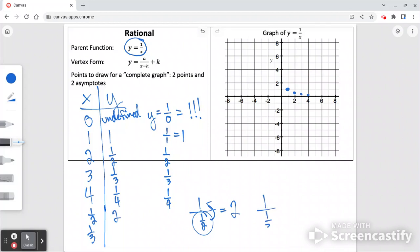1 divided by 1 third is the same idea. How many times does 1 third fit into 1? It fits in 3 times. So we would get 3 for an answer. So 1 half, 2; 1 third, 3.